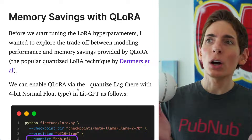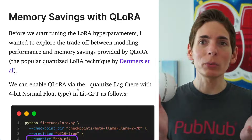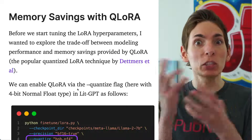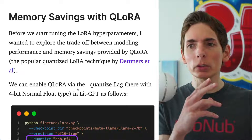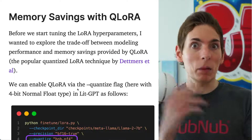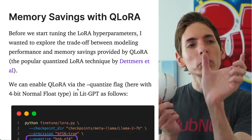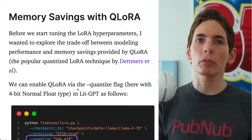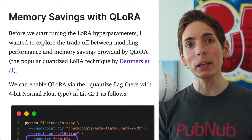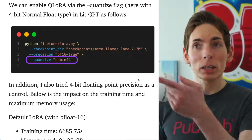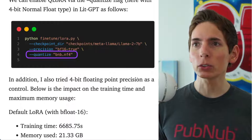Expanding on LoRA, you can take a step further by using QLoRA. The Q stands for quantizing, which means you're going to take the original model and cut it down a bit. You want to save memory by reducing the precision of the floating point values in the matrices. This will allow you to train more quickly and use less memory. Let's take an example look at what quantized LoRA fine-tuning looks like.